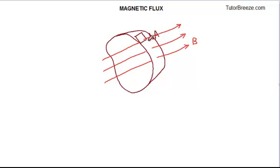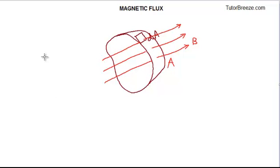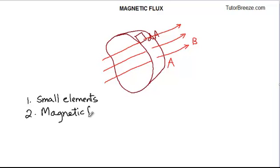How do we find the magnetic flux through this entire surface? To find the magnetic flux through the area A, we proceed as follows. First, we divide the surface A into small elements of area dA. The next step is, for each such small element, we find the magnetic flux. Then the third step is we add up all these tiny contributions to find the total flux through the surface.